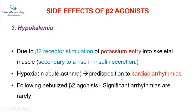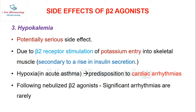Hypoxia occurring in acute asthma may predispose to cardiac arrhythmias. However, following nebulized beta-2 agonist therapy, significant arrhythmias are rarely seen in clinical practice. One important point to remember is that hypokalemia is the most potentially serious side effect caused by beta-2 agonists.